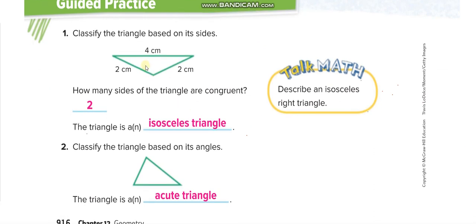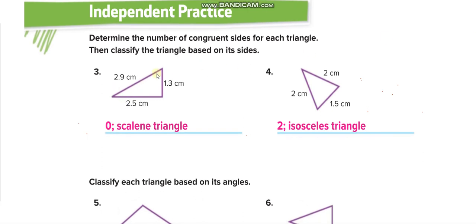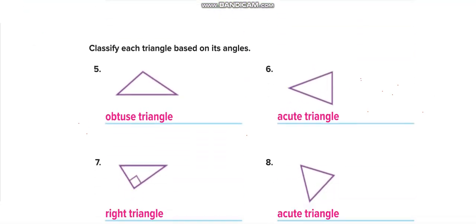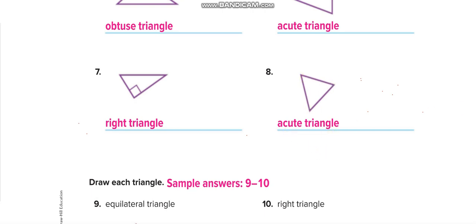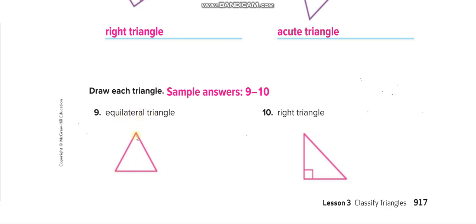Moving to the next examples: this triangle has two sides of the same length, so it is an isosceles triangle; and all angles are less than 90, so it is an acute triangle. This next one has no sides of the same length — scalene triangle. Another one has two sides the same — isosceles triangle. One has a wider angle — obtuse triangle. Another has all angles less than 90 — acute triangle. And the last one shows a right angle square — right triangle.